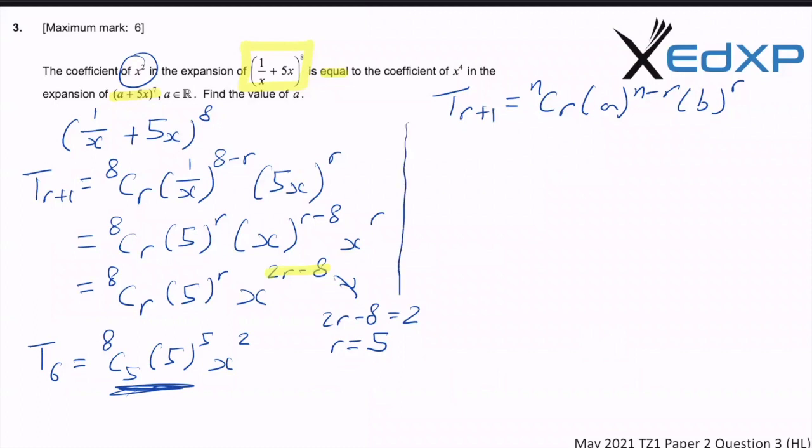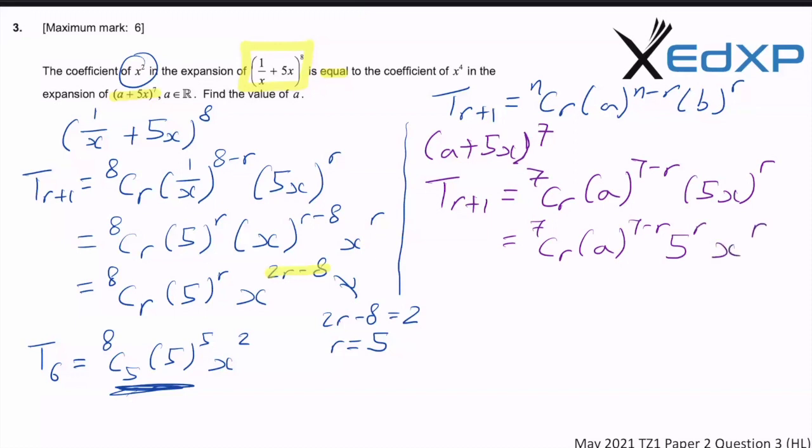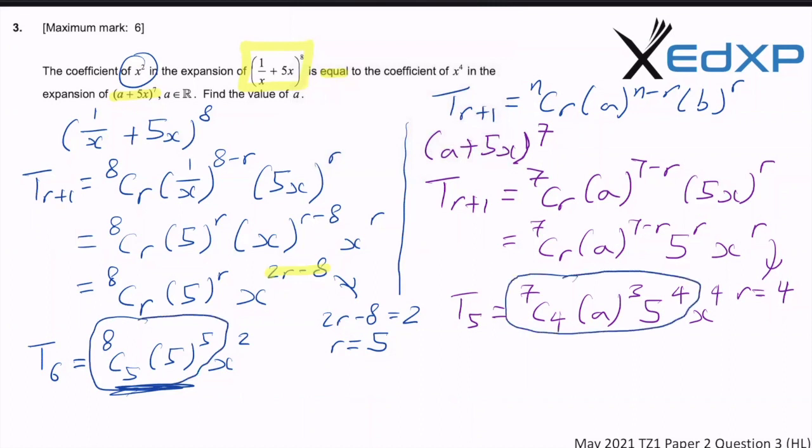Let's do the second expansion. Let me use a different color. So we have a plus 5x power 7. And let's write out the general term for this. So it's tr plus 1 is equal to 7cr. Let's go a bit faster now. So a to the 7 minus r, 5x to the r. If you're not sure, you can always rewind the video to have a look again. Same discipline, constants to the left, the coefficients to the left, x terms to the right. And if we want the coefficient of x power 4, then r must equal to 4. Then we are interested in the fifth term, 7 choose 4, a to the power of 3, 5 to the power of 4, x to the power of 4.